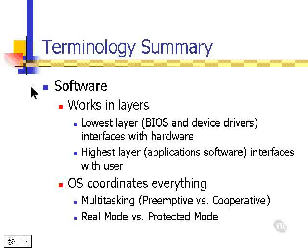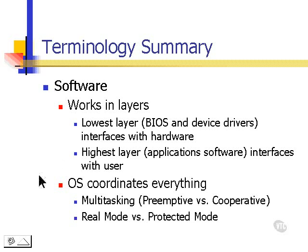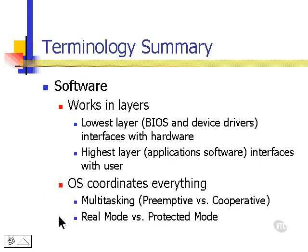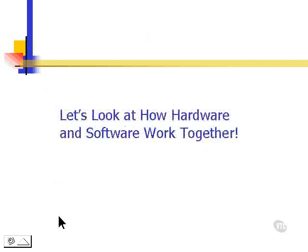Software works in layers. The lowest layer, BIOS and device drivers, interfaces with hardware. The highest layer are the applications themselves. The operating system software sits in the middle and coordinates everything. We have multitasking, meaning that we can work with more than one thing at a time. Older computers use real mode, while newer computers and operating systems use what's called protected mode. Now, let's take a look at the next lesson and see how hardware and software work together.